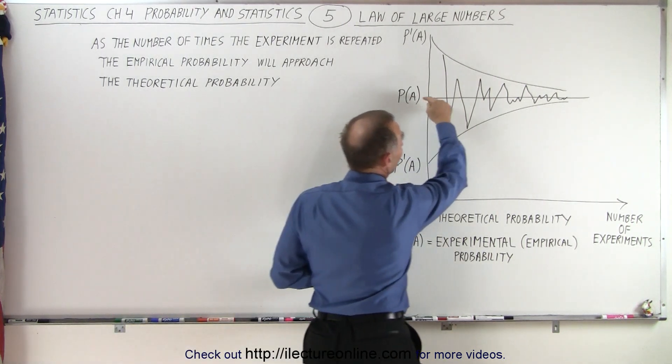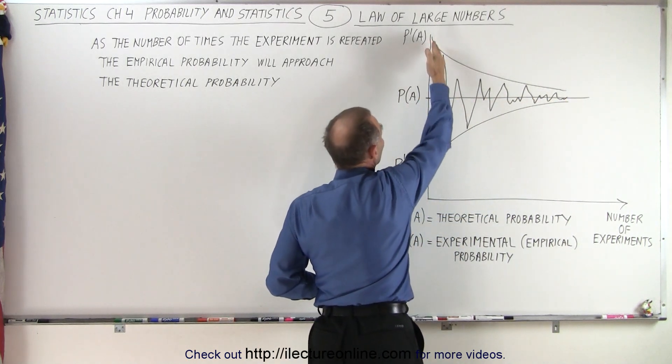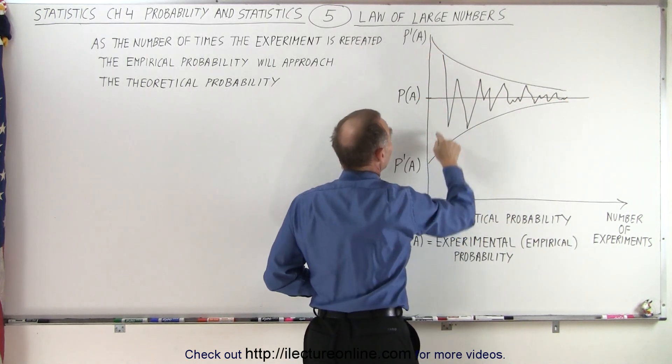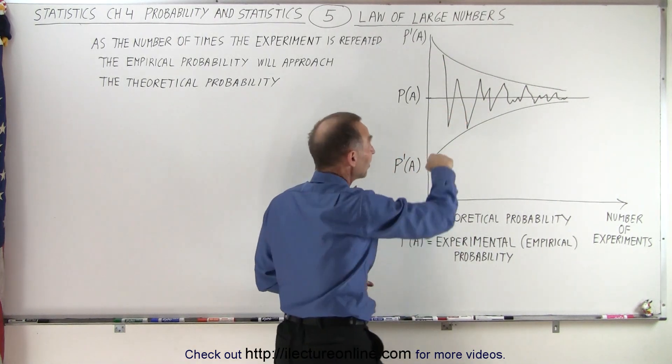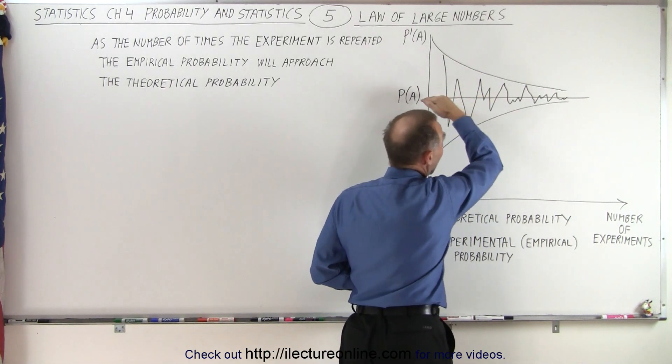If this is my theoretical probability, then you can see that if I only do a few experiments, I can be off by a lot and swing back and forth. But as I repeat the experiment and you average all that out...